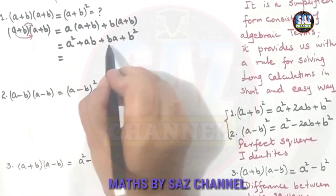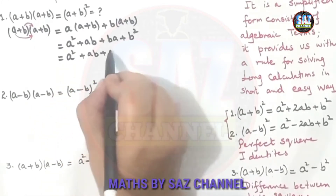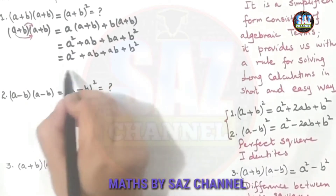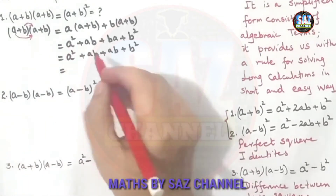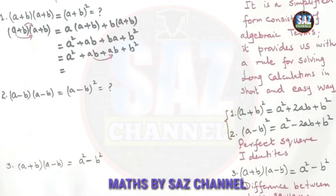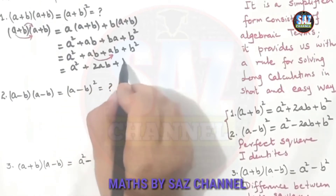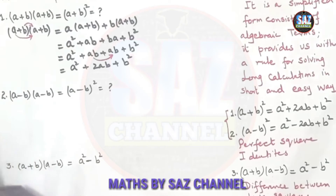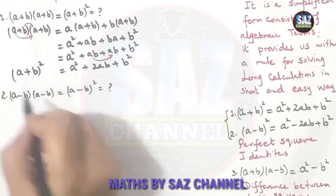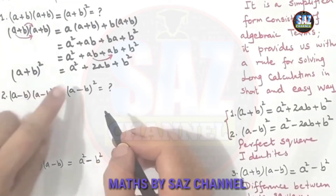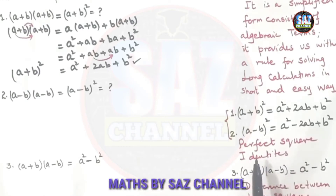Now ab and ba are like terms. We can rearrange them: a² + ab + ab + b². Adding the like terms gives 2ab, so the expression becomes a² + 2ab + b². This is how the formula comes — whenever we need to expand (a + b)², we apply this identity, known as the perfect square identity with sum.